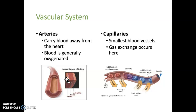In general, with just a couple of exceptions, arterial blood is oxygenated, meaning it has a really high concentration of oxygen, and it will appear a bright reddish color.